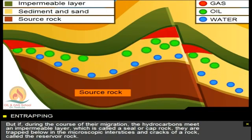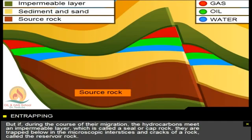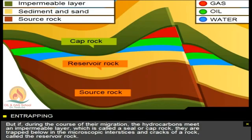But if, during the course of their migration, the hydrocarbons meet an impermeable layer, which is called a seal or cap rock, they are trapped below in the microscopic interstices and cracks of a rock called the reservoir rock.